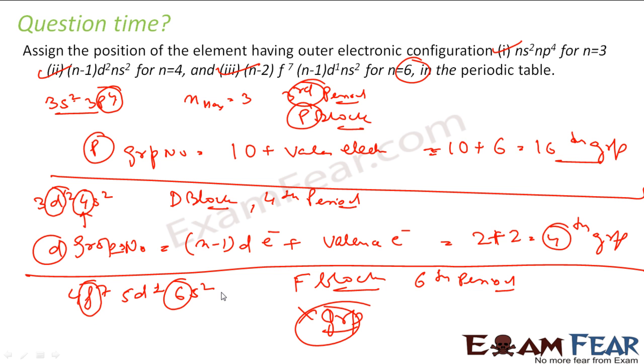Just by the electronic configuration, I can find the group, period, and block. This is very easy.